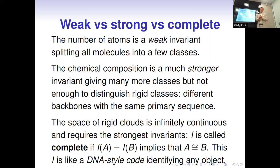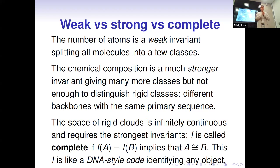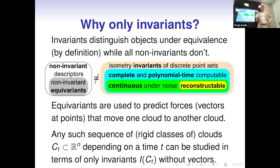In mathematics almost everything is possible, so we are looking for a complete invariant. Complete means: if the invariant function I takes the same value on two molecules, they should be rigidly equivalent. Informally speaking, it can be considered as an analogue of a DNA-style code used to identify individuals in serious cases such as court problems.